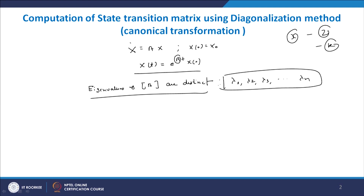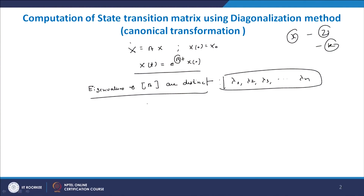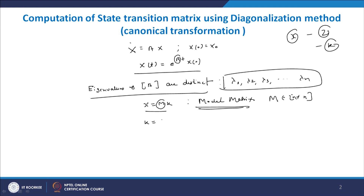These eigenvalues are all different, and diagonalization is based on new state vectors. We assume a new state vector k, and we can write the state equation as x = M·k, where x is the original state vector, k is the new state vector, and M is the modal matrix, which is an n×n matrix. From this equation, k = M⁻¹·x.